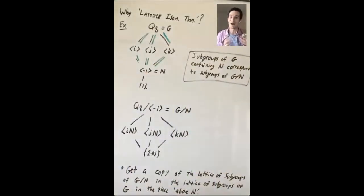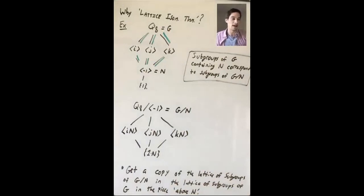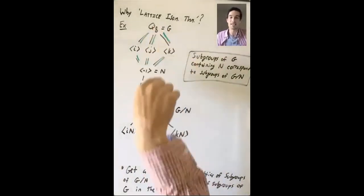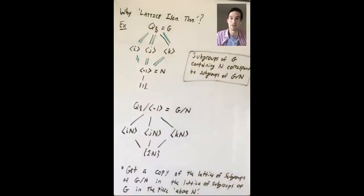That's why this is called the lattice isomorphism theorem. In the book there's another nice diagram for D8, and I would definitely encourage you to check that out.